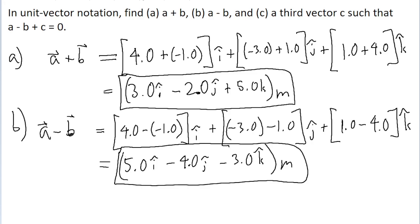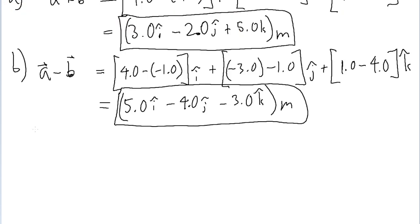Part c is asking us to find a new vector, a third vector c, such that a minus b plus c is equal to zero. So we need to find a new vector, so that when we add it to a minus b, we get zero.